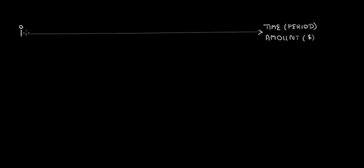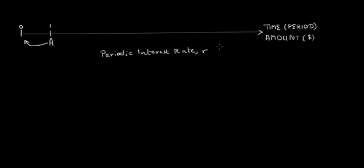Let's say today is time 0, and at the end of a certain time period — call it period 1 — you expect to receive a fixed amount of money, let's call it A dollars. The question is: what is the present value of this A dollars today at time 0? The answer depends on the applicable periodic interest rate R. Discounting A dollars over period 1, we get the present value at time 0, denoted by PV, equal to A divided by 1 plus R.